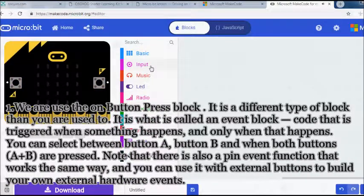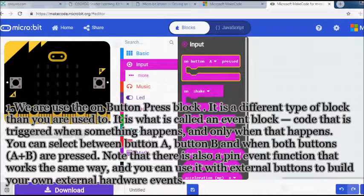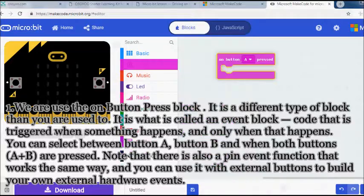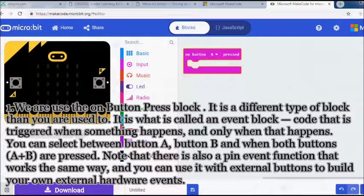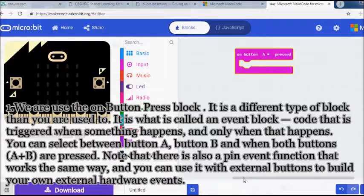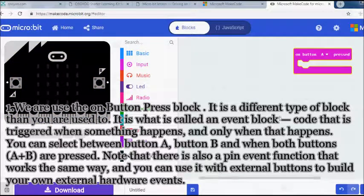It is a different type of block than you are used to. It is what is called an event block, code that is triggered when something happens, and only when that happens. You can select between button A, button B, and when both buttons A plus B are pressed. Note that there is also a pin event function that works the same way, and you can use it with external buttons to build your own external hardware events.